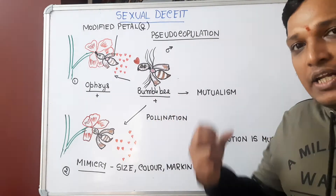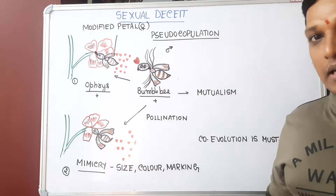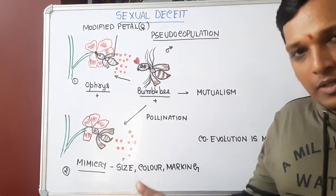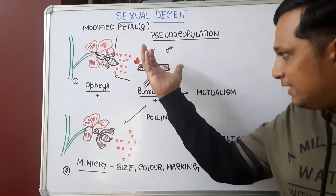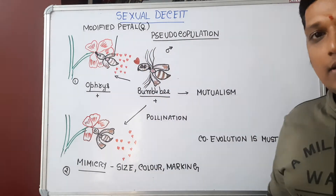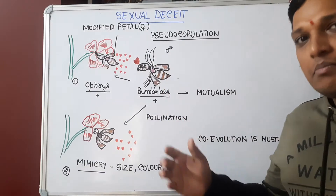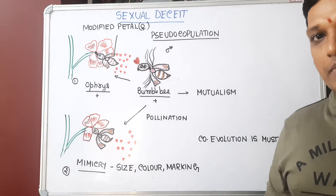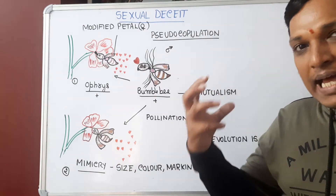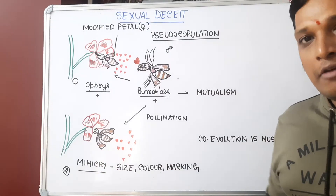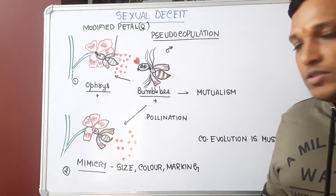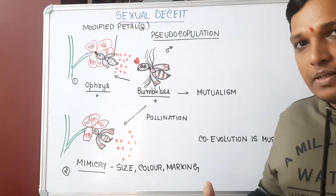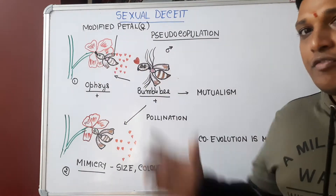So what happens is, the male bumblebee needs continuous copulation to live. If it doesn't get a female bee, it won't be able to copulate, and it will die. So to prevent death, the male bee has to continuously copulate with the female bee. But a live female bee won't be available everywhere.